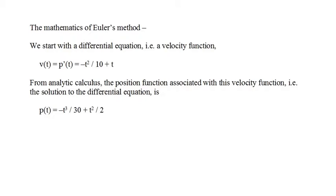if we start with a first-order differential equation, i.e. a velocity equation, v of t equal p prime of t equals minus t squared over 10 plus t, this differential equation has an analytic solution: p of t equals minus t cubed over 30 plus t squared over 2. The analytic solution is written as a mathematical formula that computes the exact value for p of t. We will show that as the subinterval size decreases, the solution to the differential equation computed by Euler's method accurately approximates the exact solution.